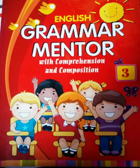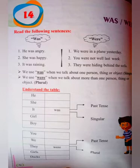It is lesson number 14. So open your book and take out page number 72. Read the following sentences here. Was and were — I will explain with the help of examples.